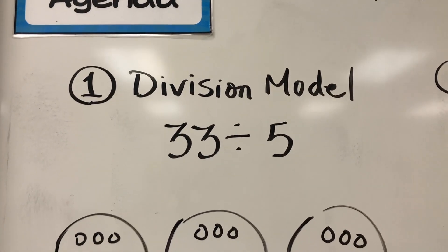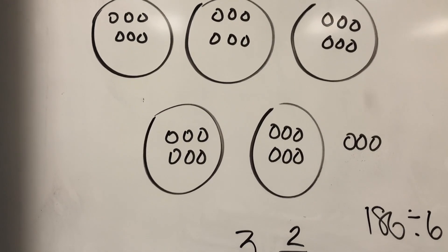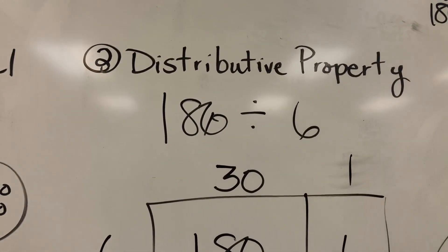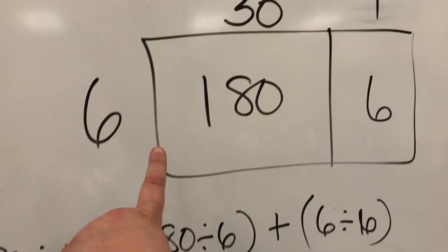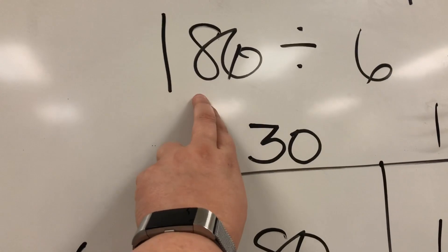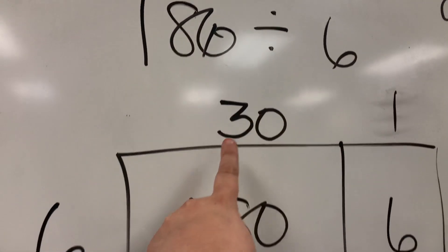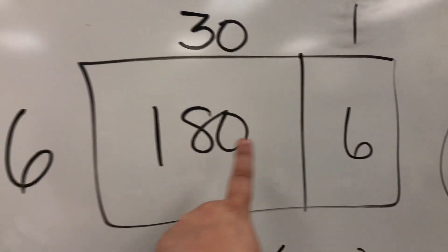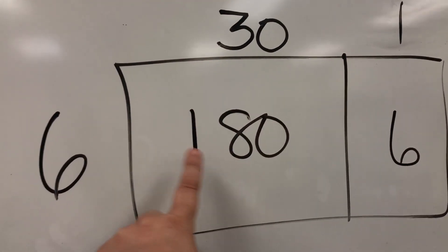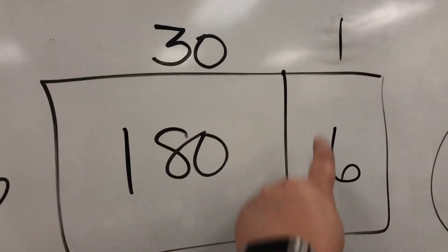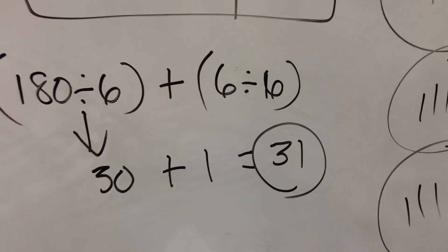Later in the day we worked on math, continuing our division chapter with one new way to divide — using the distributive property along with the area model. I showed them the division model using circles with equal groups, and how remainders go outside. For the distributive property with the area model, the total area goes in the box and we break the dividend into two numbers easily divisible by the divisor — for example, breaking 186 into 180 and 6. Then 180 ÷ 6 = 30, and 6 ÷ 6 = 1, giving a quotient of 31.